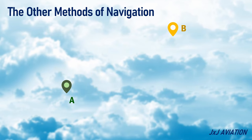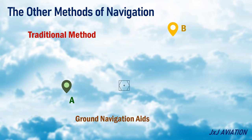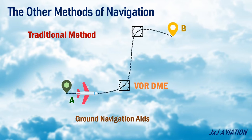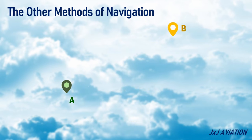Now let's consider the traditional method of navigation using ground-nav aids. The aircraft must fly towards the ground-nav aids, such as a VOR or DME, and on reaching it, the aircraft must fly to the next VOR or DME, until it reaches its destination. Area navigation, or RNAV, however, allows an aircraft to fly directly from A to B.